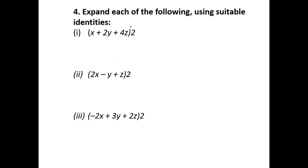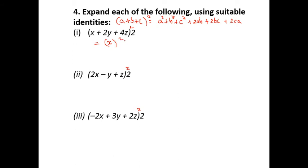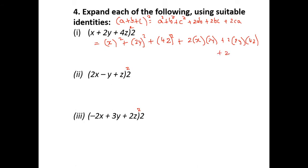Fourth sum: when there is a power of 2 with 3 terms, we use (A + B + C)² = A² + B² + C² + 2AB + 2BC + 2CA — this gives 6 terms in the answer. Applying this to (x + 2y + 4z)²: first 3 terms squared give x² + (2y)² + (4z)² = x² + 4y² + 16z², then 2×x×2y + 2×2y×4z + 2×4z×x.